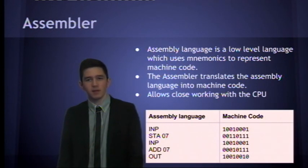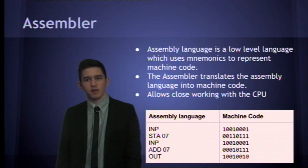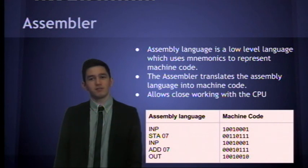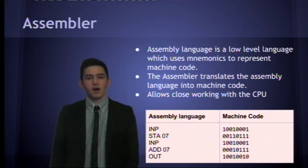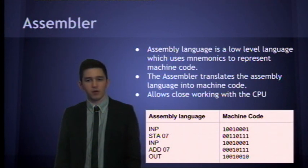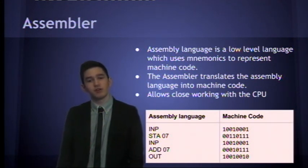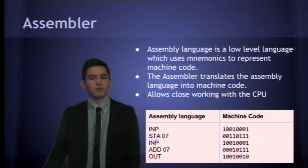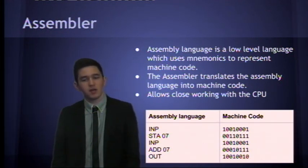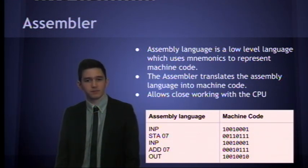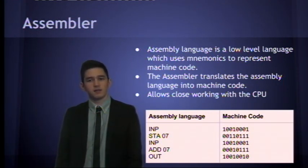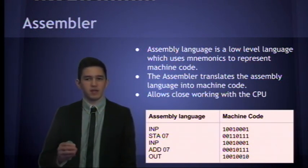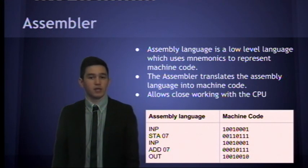Let's have a look at an assembler. Assembler language is a low-level programming language which uses mnemonics to represent machine code. For example, IMP may be the mnemonic for the assembly language, and that could be translated into machine code. As you can see, that's an example machine code just to represent what it might look like, but that would run through the processor. And the assembler will assemble the assembly language into machine code, so the CPU can understand it.